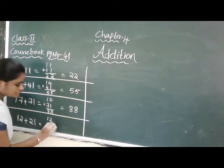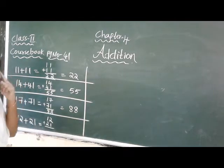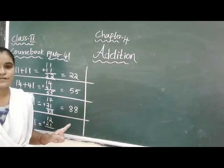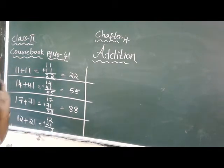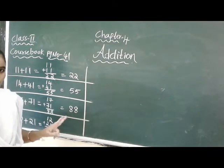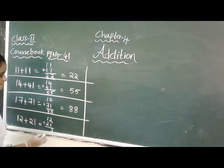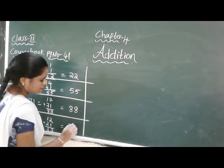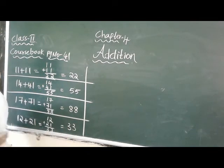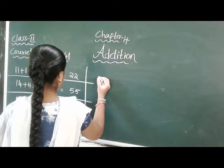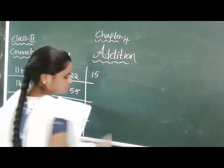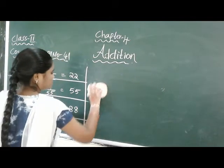Next: 12 plus 21. 2 in the mind, take 1 finger, 2 after 3. Then 1 in the mind, take 2 fingers, 1 after 2, 3. Answer is 33.